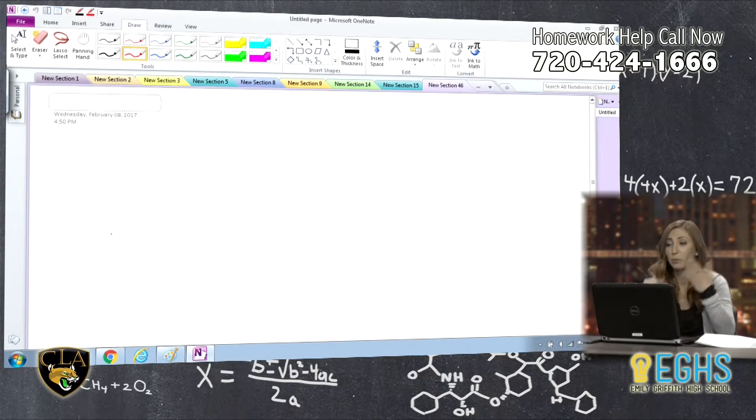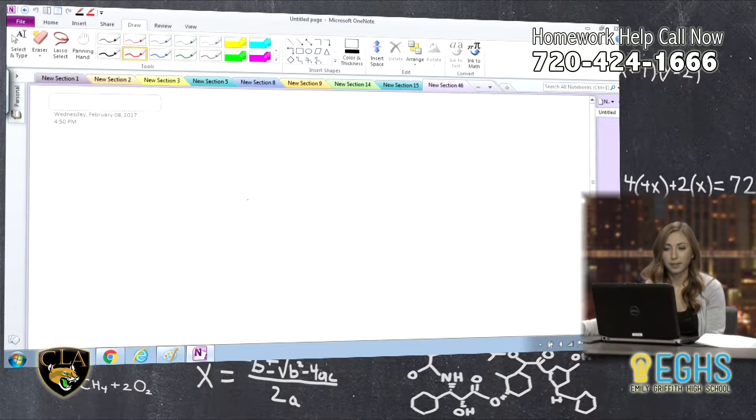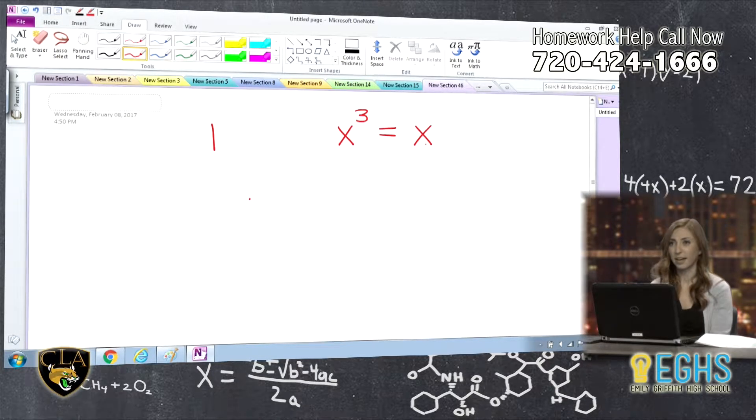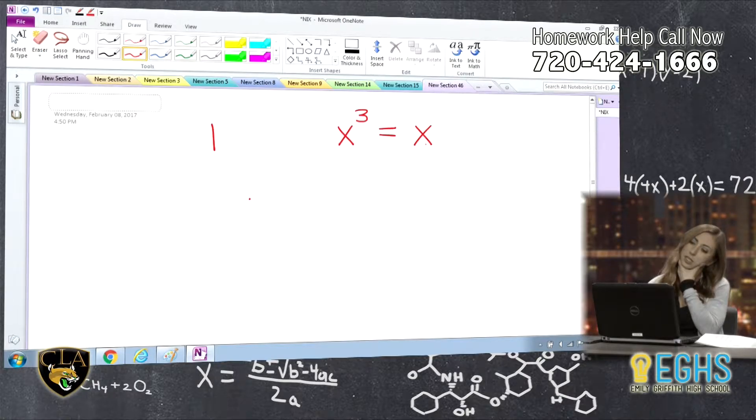They said which real numbers are equal to their cubes. Real numbers are, well actually it's everything but imaginary. It's all the numbers you've been working with except for imaginary numbers. So if you know the properties of numbers and how they behave, really what we're asking is X³ equals X.